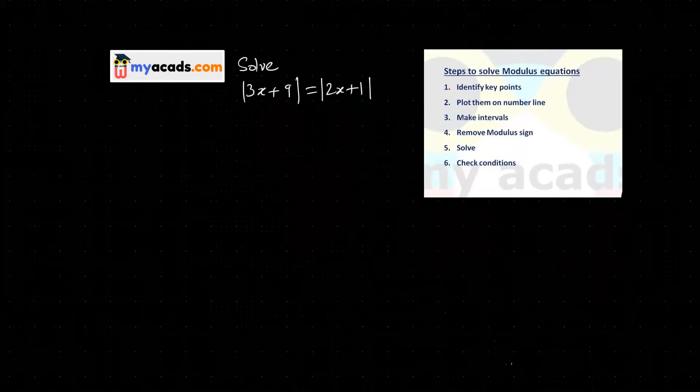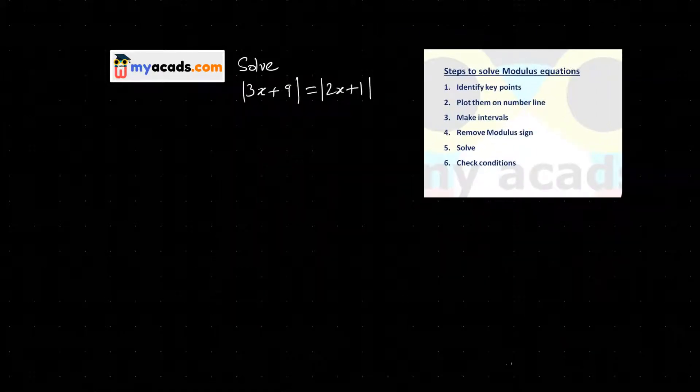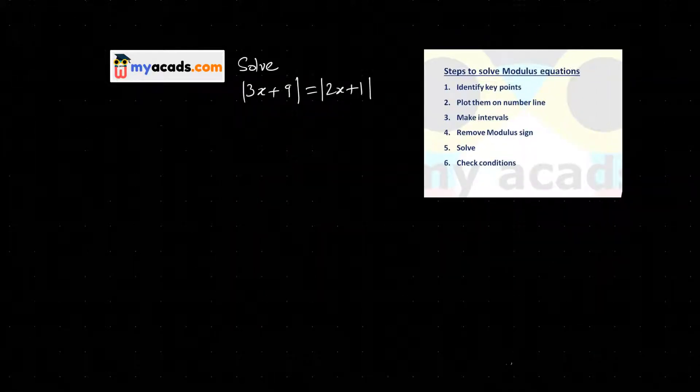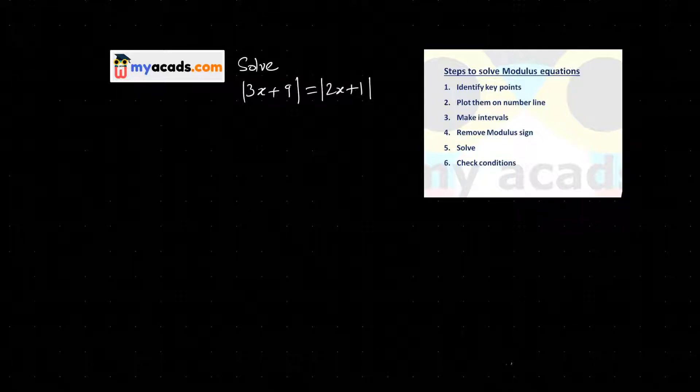We have to solve this equation: mod of 3x plus 9 equals to mod of 2x plus 1. We have to find the value of x.